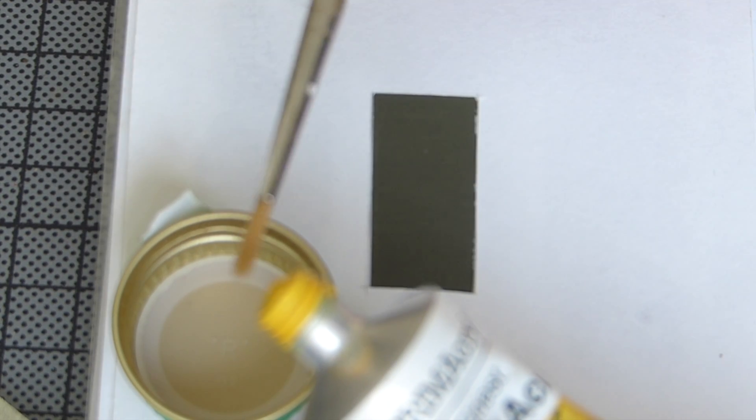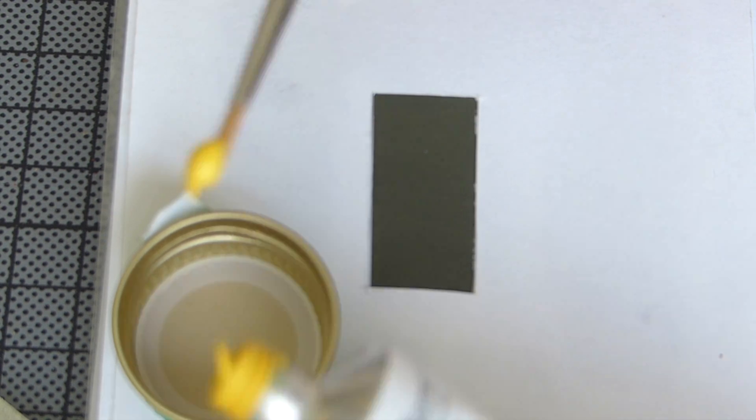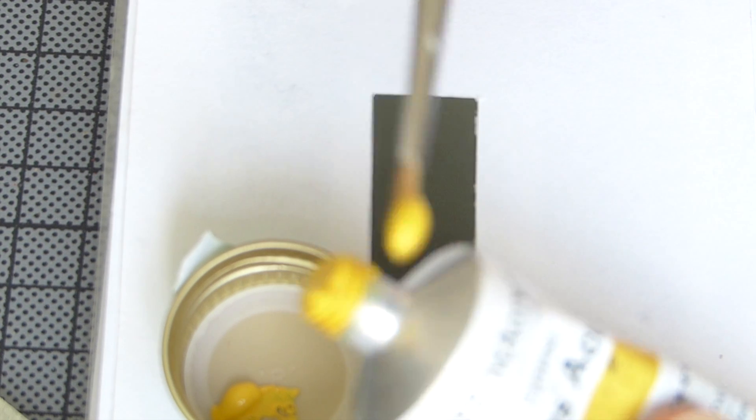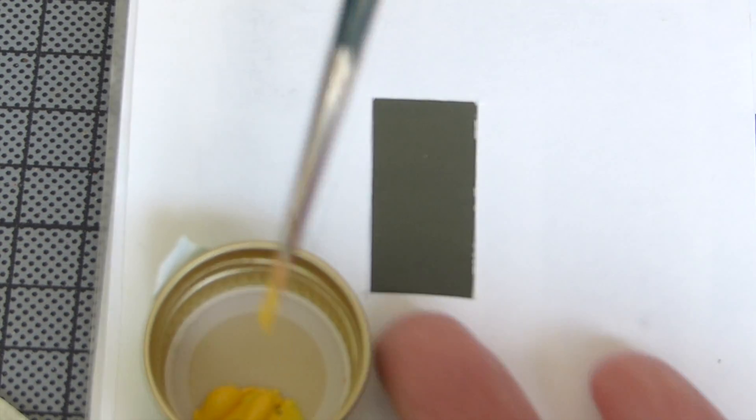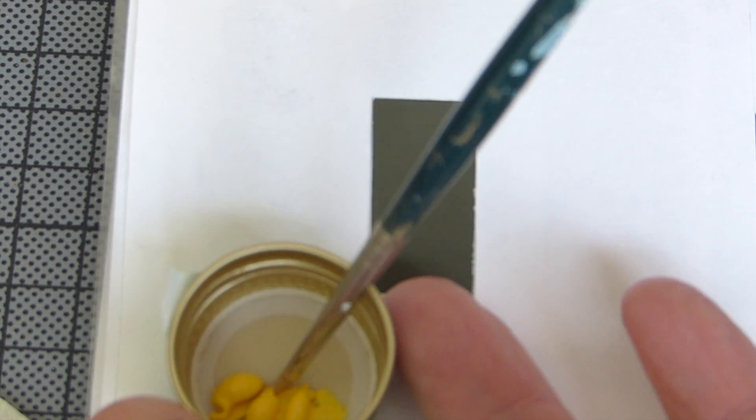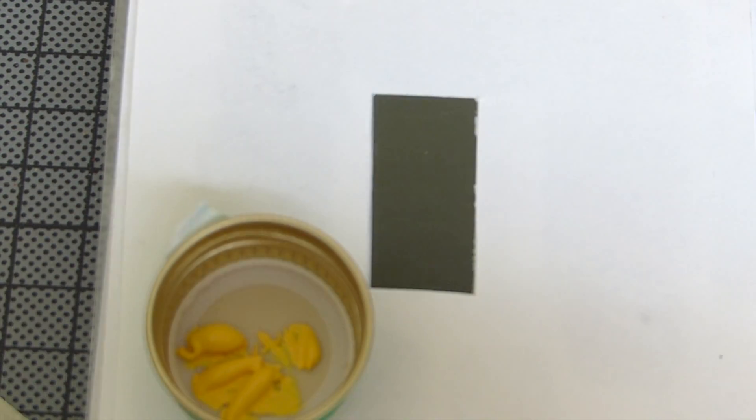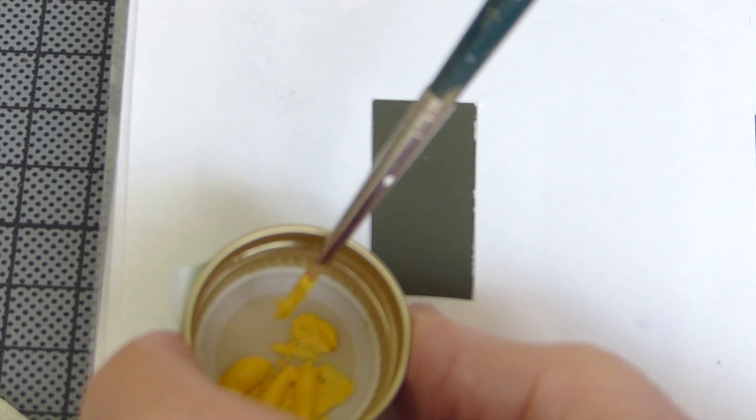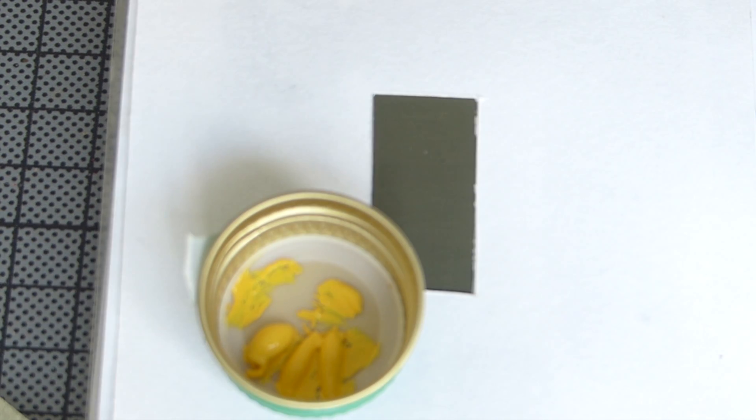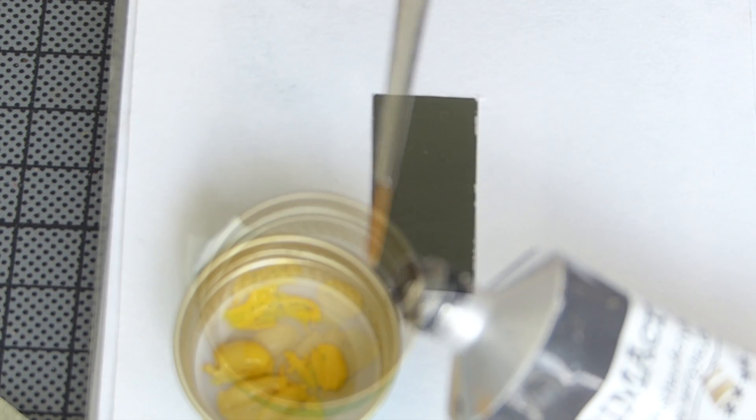We begin by adding three parts of Vanadium Yellow to our mixing container. Vanadium Yellow is a single pigment artist acrylic paint consisting of pigment yellow number 184. There may be other artist acrylic paints containing the same pigment but sold under a different name, so be sure to check the ingredient list and make sure that PY184 is the pigment used for that particular color.